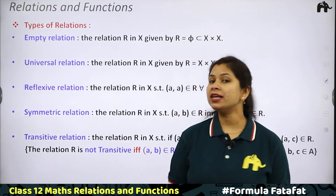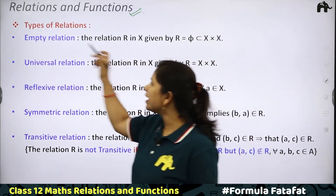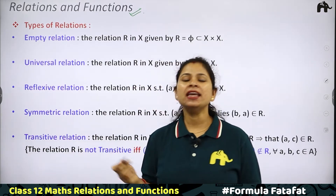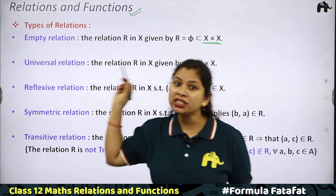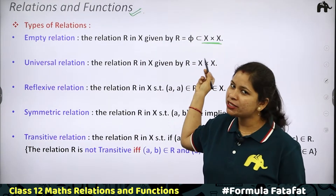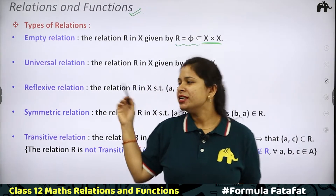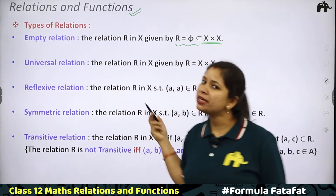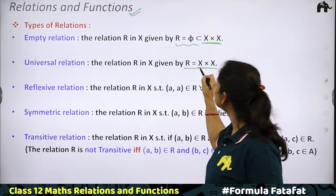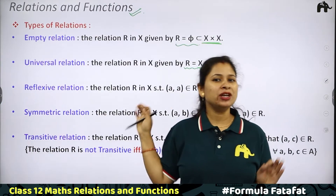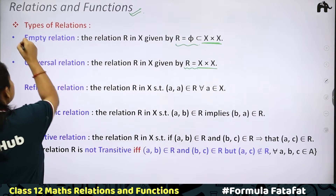This is our first chapter of the class — Relations and Functions. First of all, we will study Types of Relations. What is empty relation? Empty relation means no element is in the relation — it is a subset of the Cartesian product. What is universal relation? It means all elements are there, that is R should be equal to X cross X, the full Cartesian product. These two are not so important from an exam point of view.